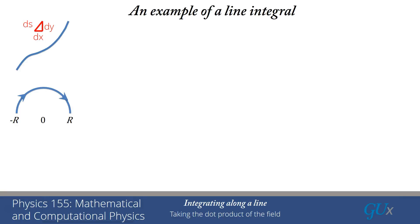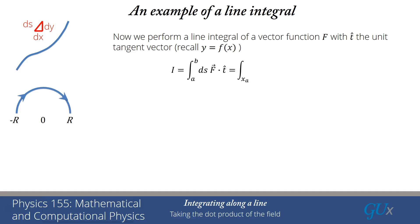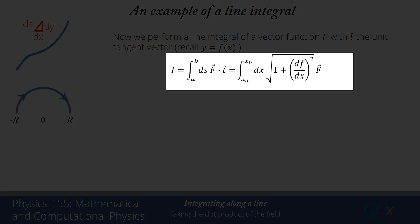Now we're going to do a similar thing, except we're going to integrate a vector field across the same arc of the semicircle. For this line integral, we first define the function f, and we determine the unit tangent vector t-hat, because the integral is defined as that vector field dotted into the unit tangent, summed up over each piece of the arc. Since I'm integrating over arc length, when I convert from an integral over s to an integral over x, I get dx times the square root of 1 plus (df/dx)², then dotted into the tangent vector t-hat.